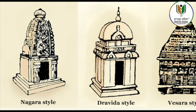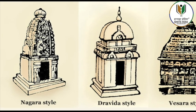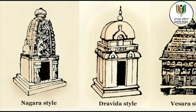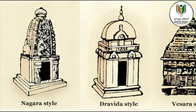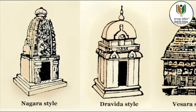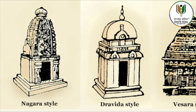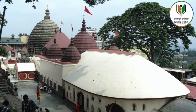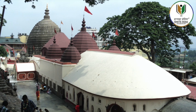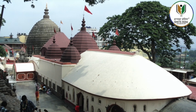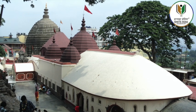By the 12th to 14th centuries, a distinct regional style developed in Assam. The style that came with the migration of the Taz from Upper Burma mixed with the dominant Pala style of Bengal and led to the creation of what was later known as the Ahom style in and around Guwahati.